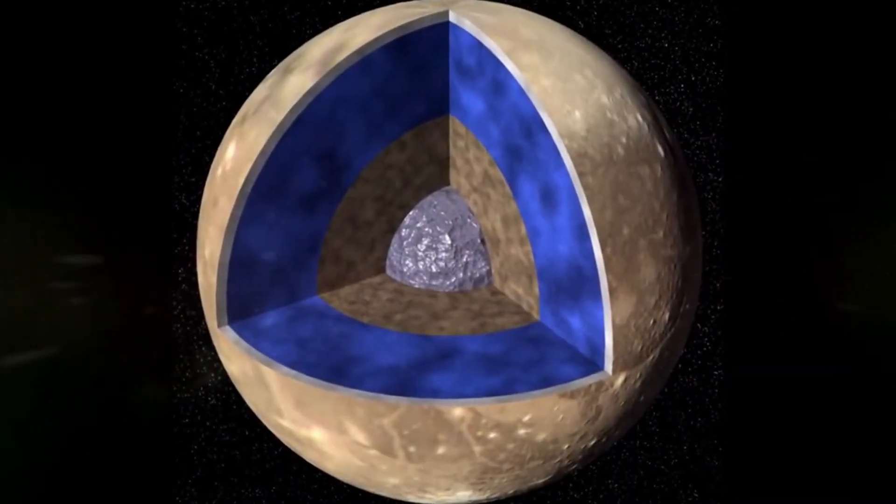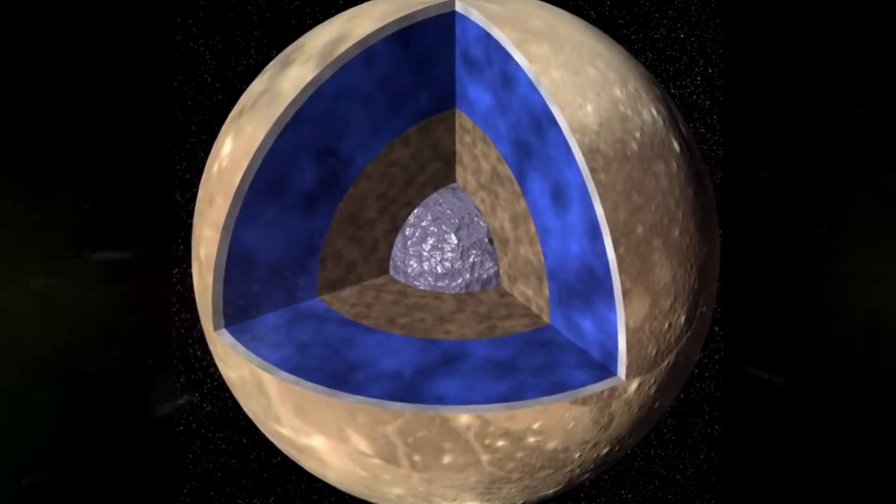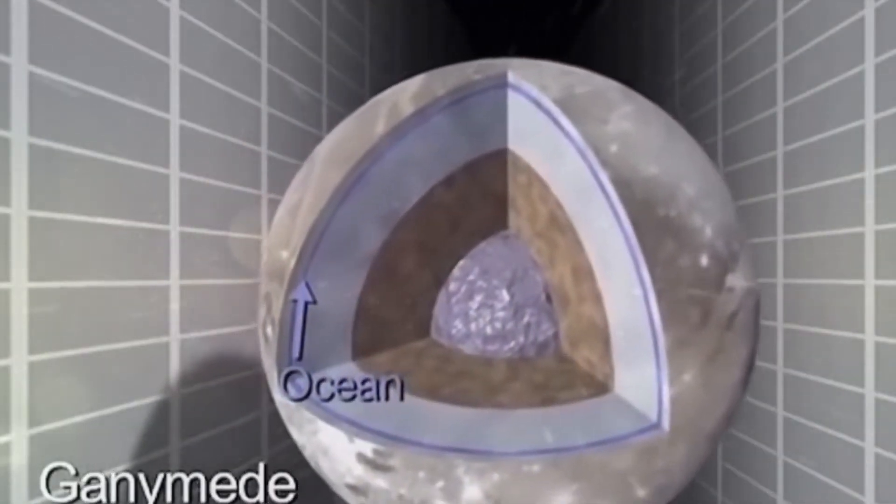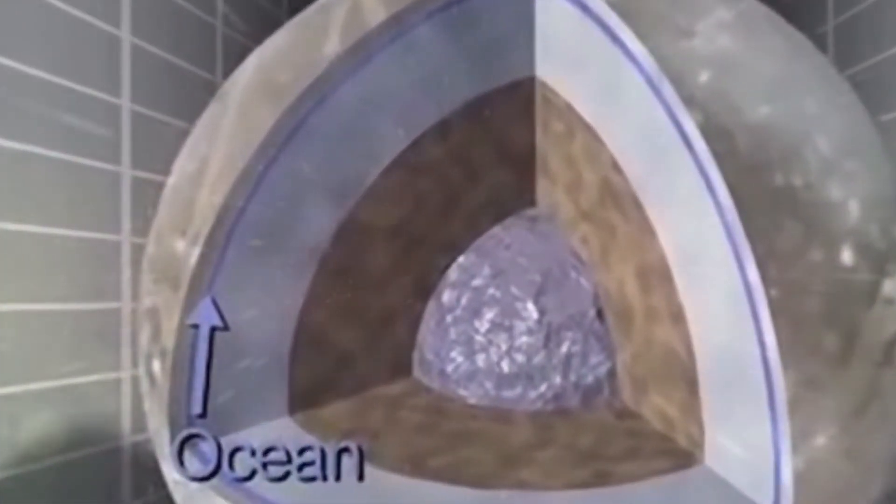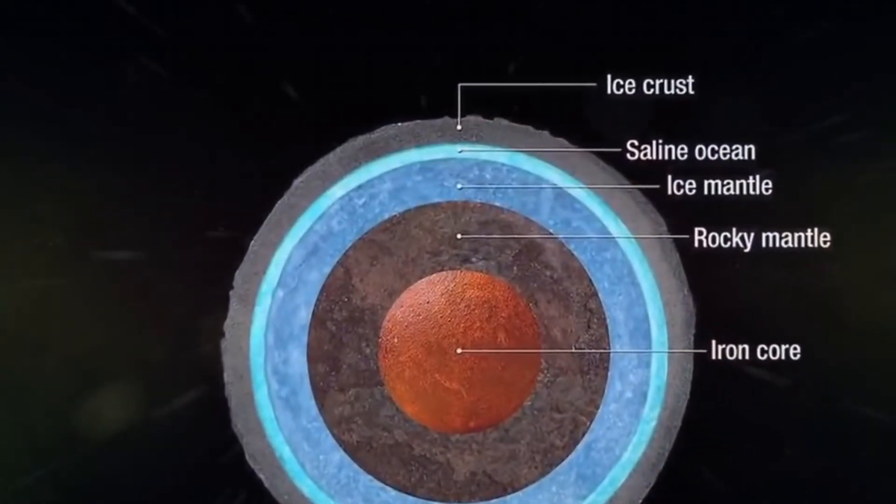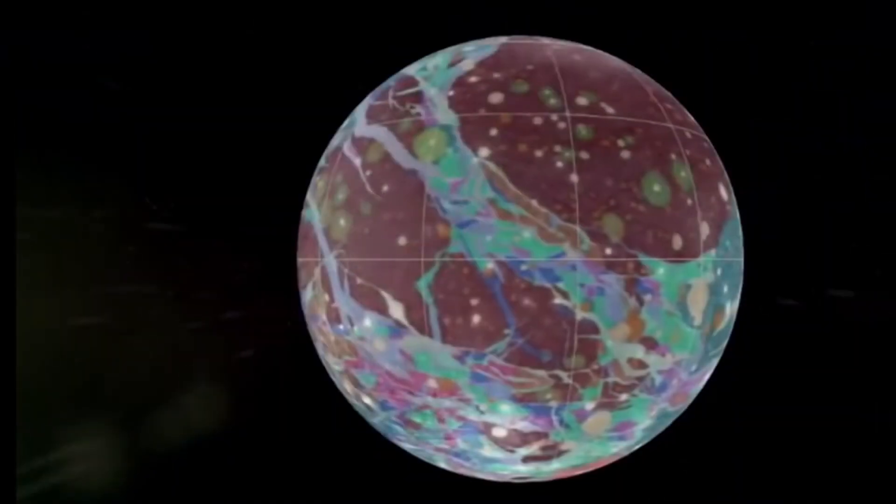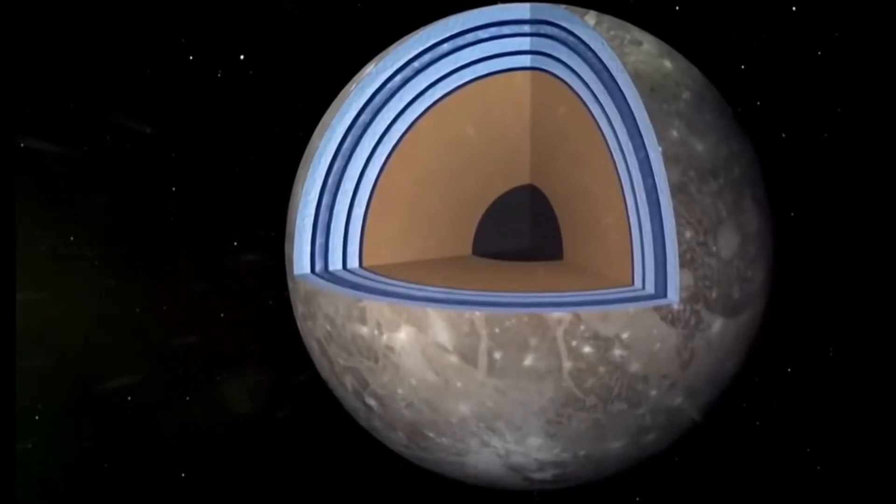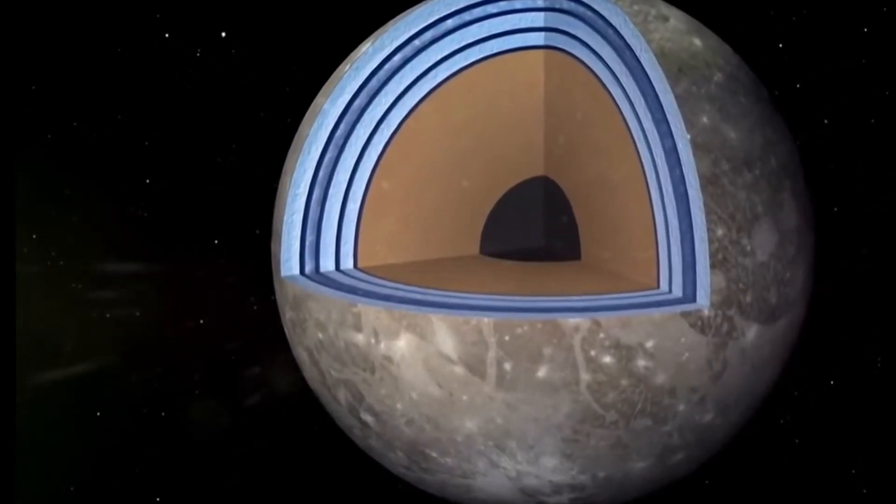The largest moon of Jupiter has three inner layers: a molten core consisting of metal or metal with sulfur impurities, a mantle consisting of rocks, and a layer of ice 900 to 950 kilometers thick. And perhaps between the ice and the mantle there is a layer of liquid water.